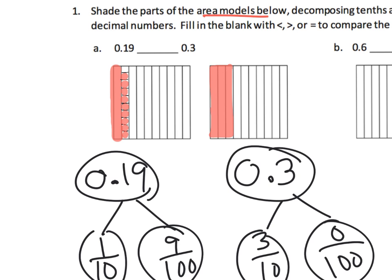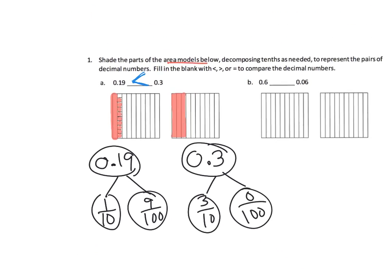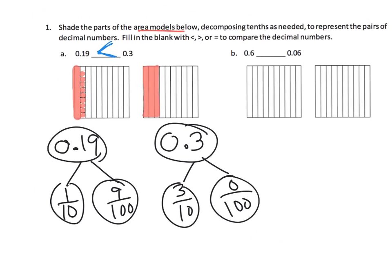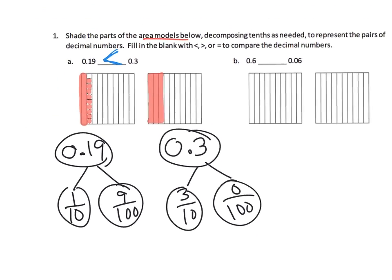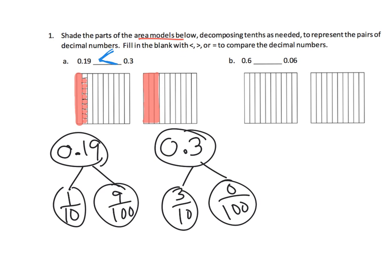It doesn't matter that we have these extra nine hundredths, because the three tenths beat that one tenth — case closed. So what symbol are we going to use? We're going to use the less than symbol, because the smaller end is on the small number and the bigger end is on the big number. The smaller side goes with the smaller number; the bigger side goes with the bigger number.